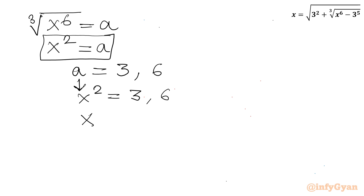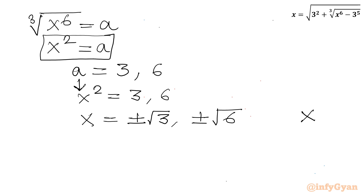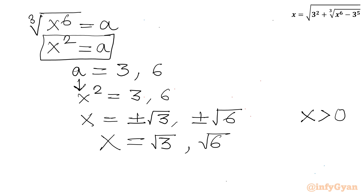Taking square roots of both sides gives four solutions: ±√3 and ±√6. However, there was a condition that x must be positive, so we accept only x = √3 and x = √6, rejecting the negative solutions.